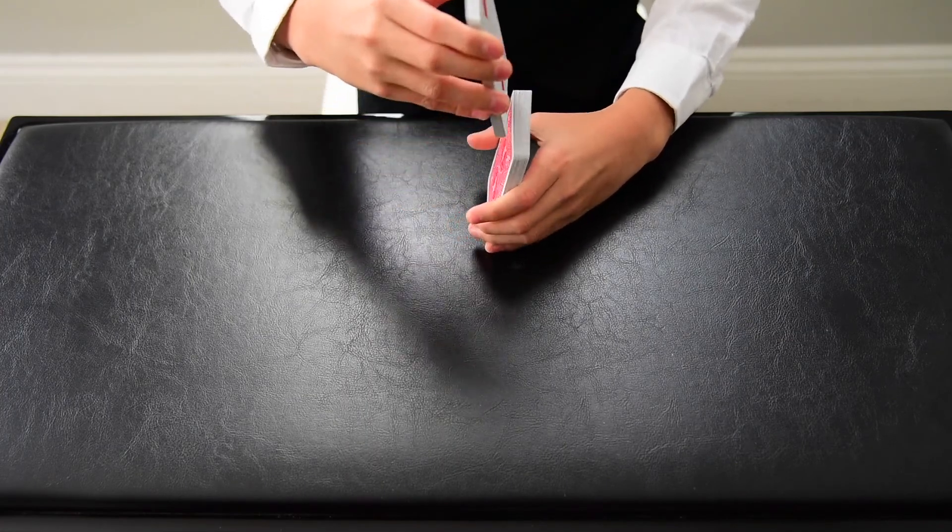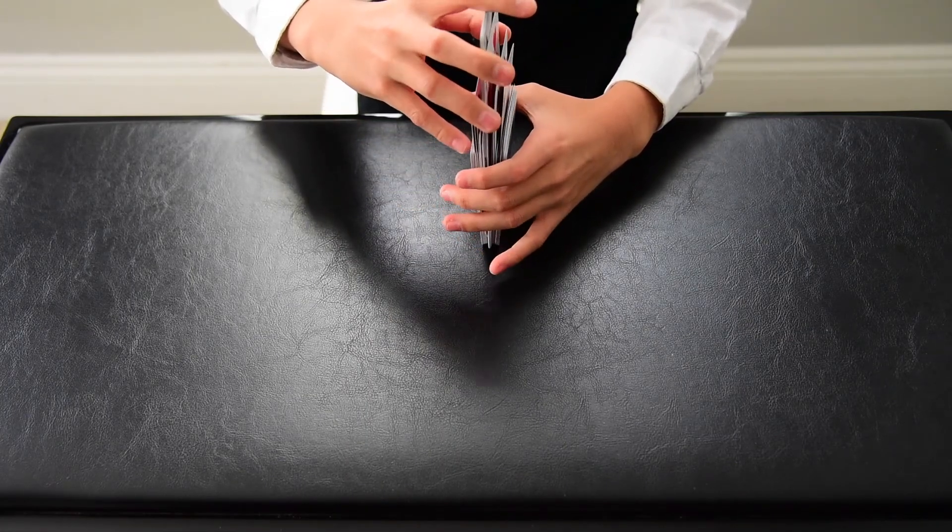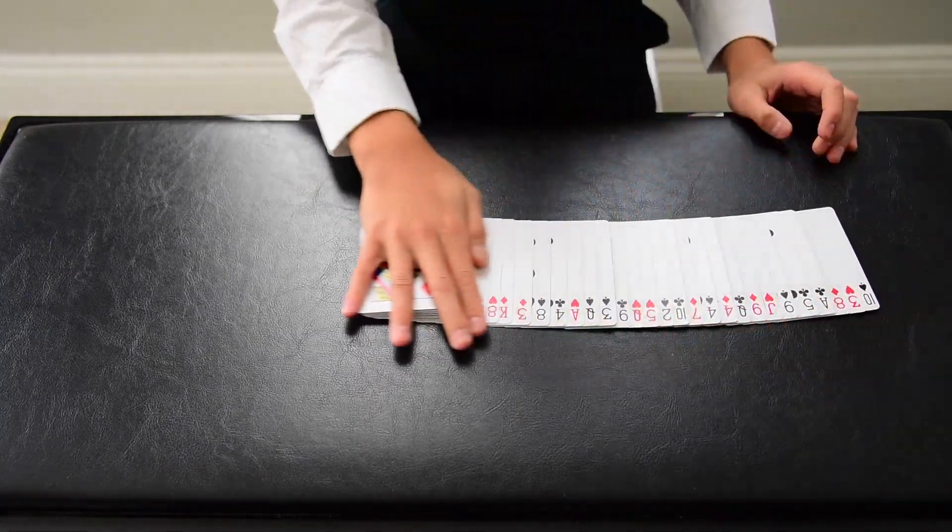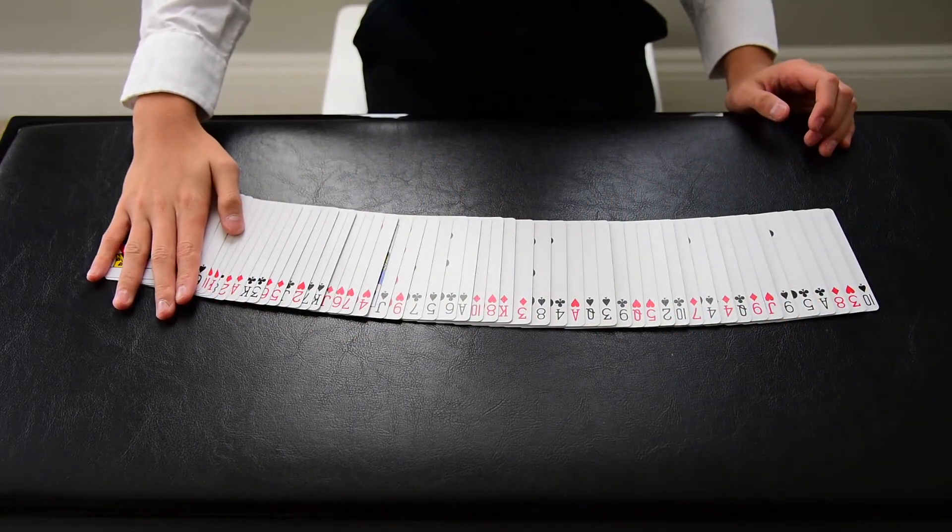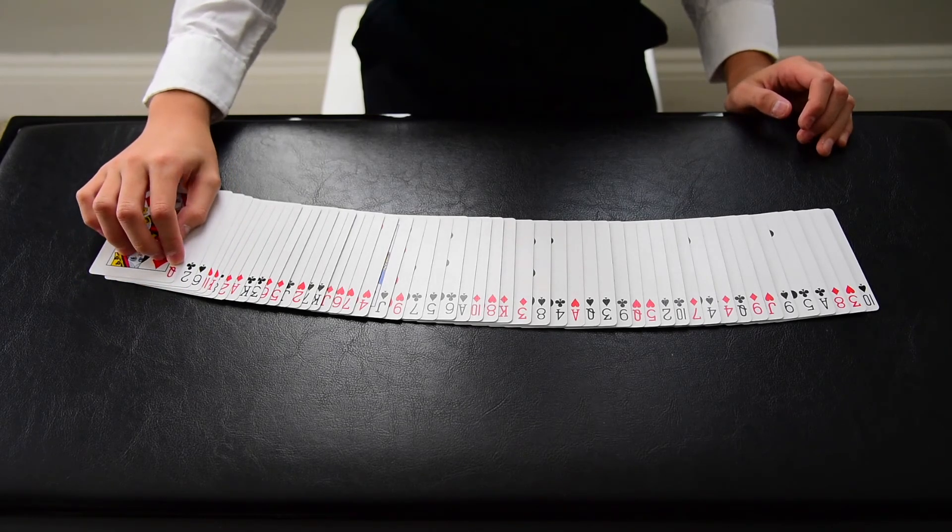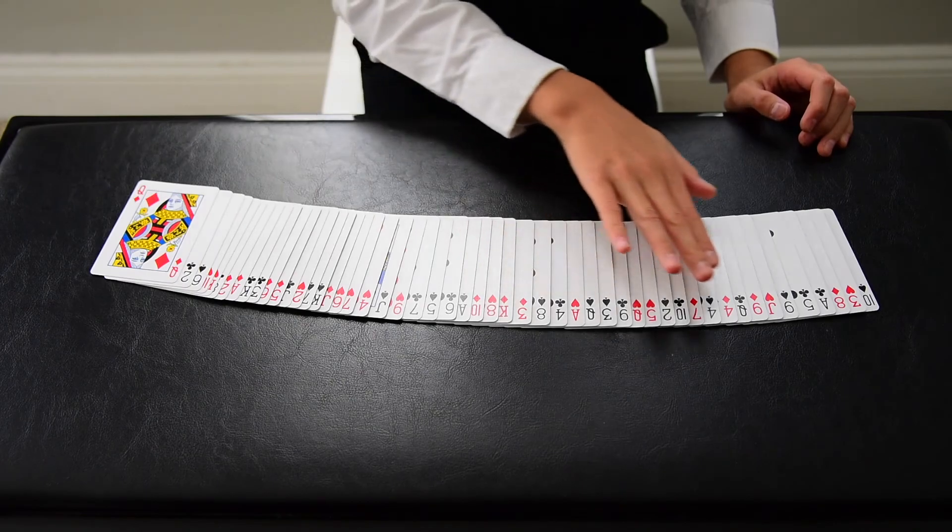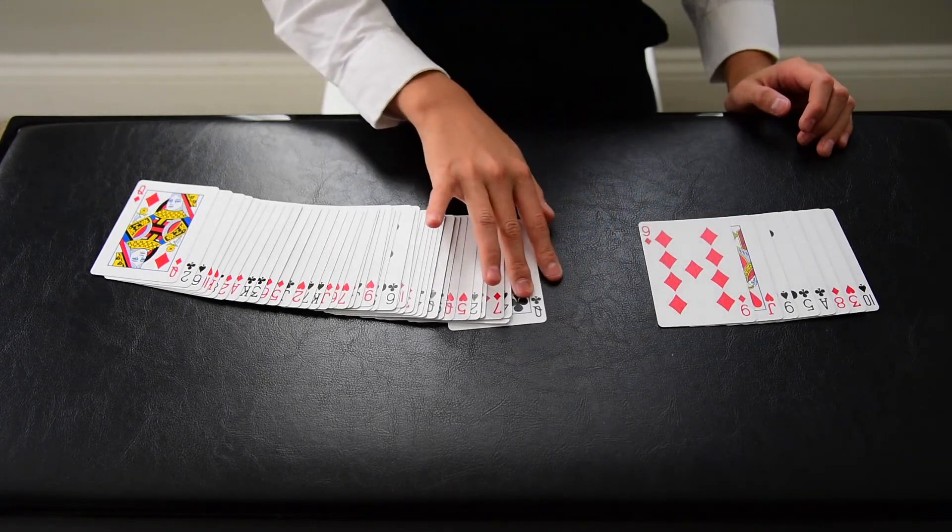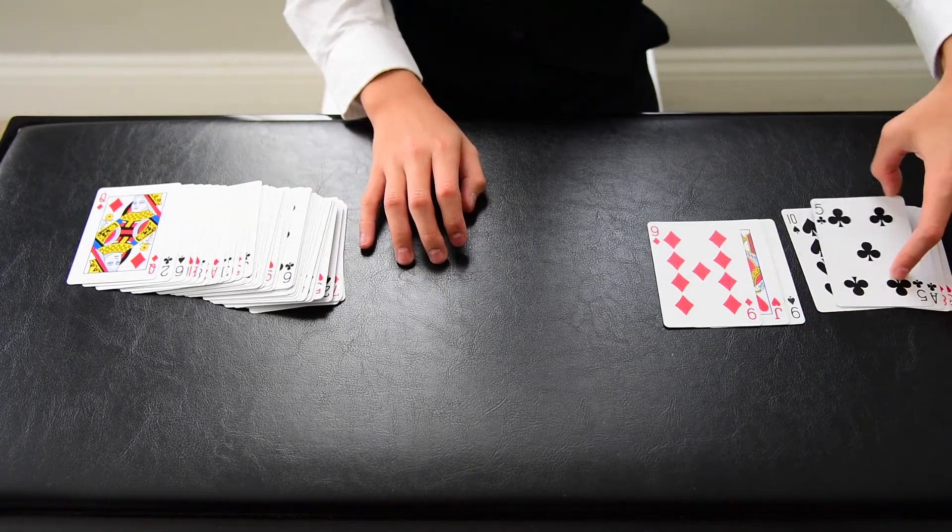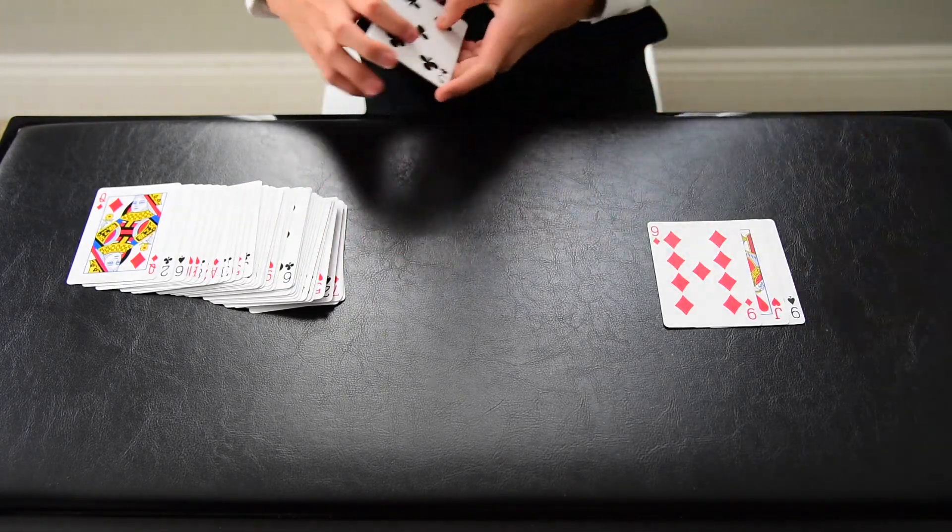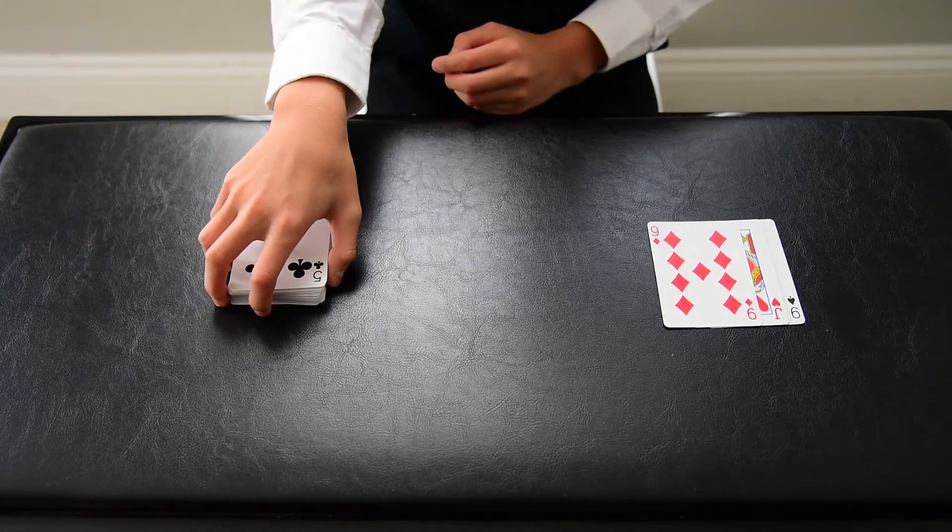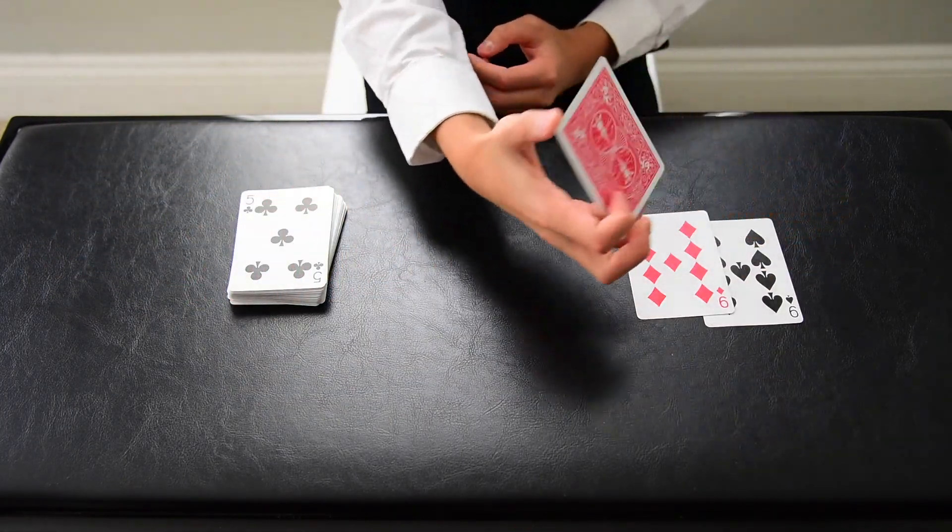You can shuffle the deck as much as you like. Now I'm going to try to do something pretty impossible. I'm going to try to locate the spectator's card. If I'm correct, it is in this top portion of cards. Now I'm going to eliminate these cards, and I'm pretty sure that the spectator's card is the jack of hearts.